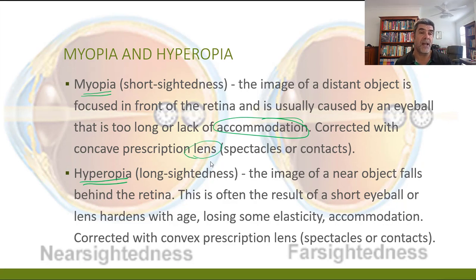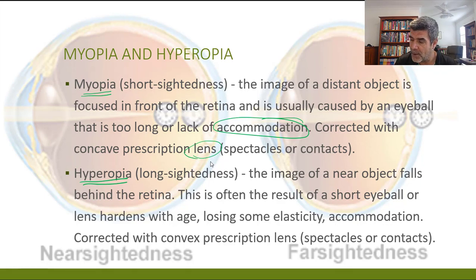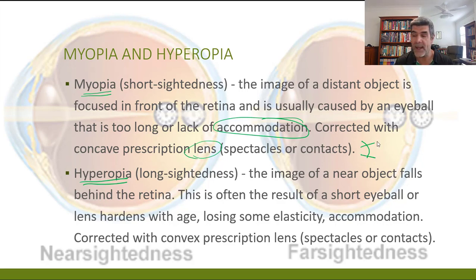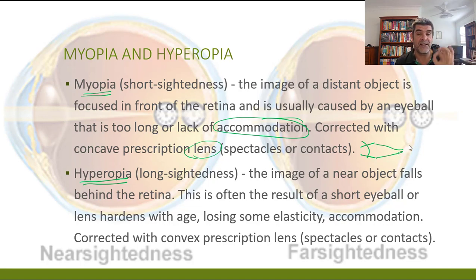If we're talking about myopia, the focus falls in front of the retina, so we need to push the focus further back. We use a concave lens, which refracts the light outward slightly, so that when it enters the eye it comes to a focus a little further back — exactly what we need to correct myopia.